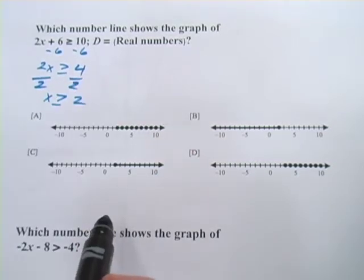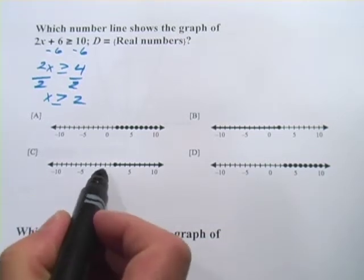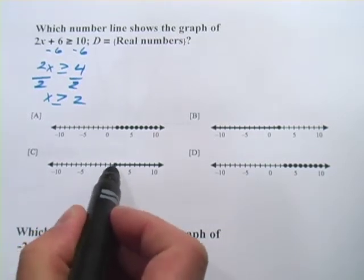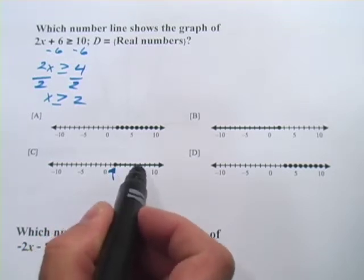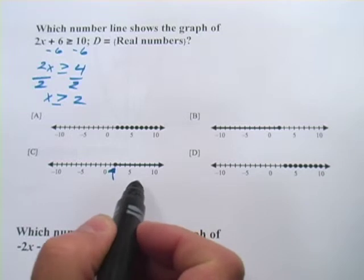And then we just have to find the number line that reflects that. This one here, this is 0, 1, 2, starts at 2 and goes up. So that shows all the real numbers that are greater than or equal to 2.